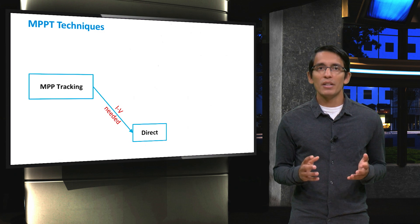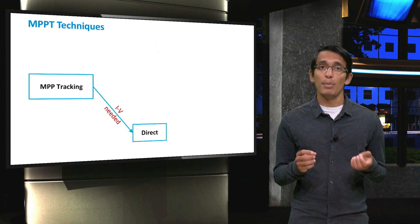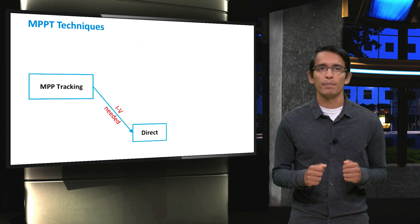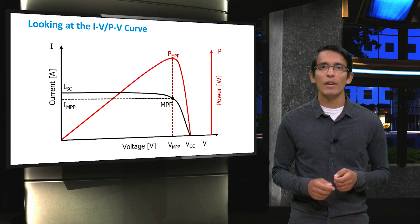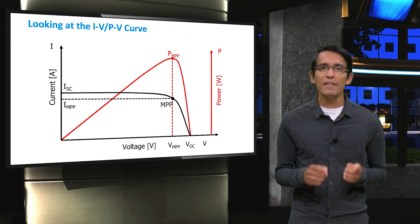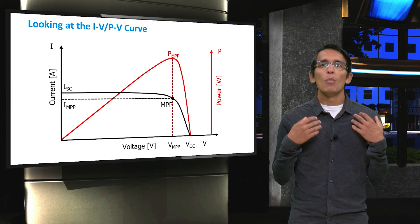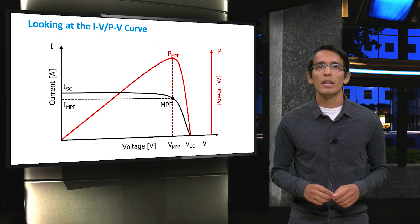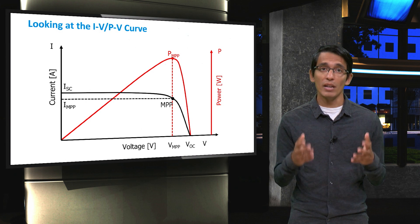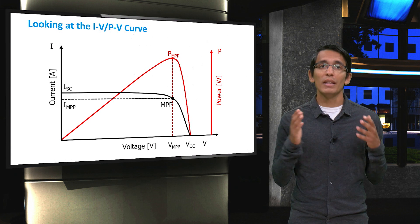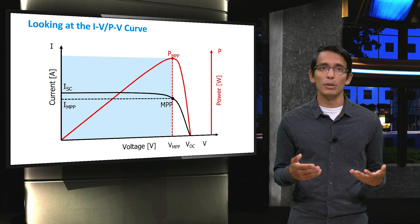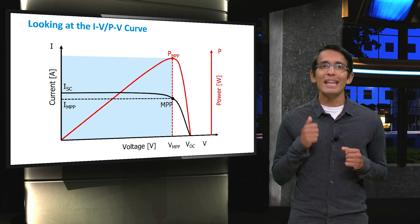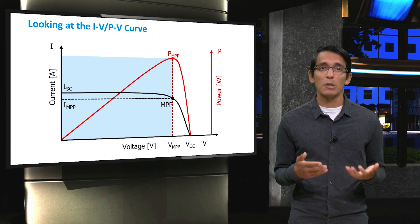However, incremental conductance is not as simple as the perturb and observe technique. Here we have our normal solar panel IV and PV curves. When maximum power point tracking directly, there are three regions of interest. There is the maximum power point itself, and there is also a region to the left of the maximum power point, shown in blue. If we are in this region, we need to increase the voltage to get to the maximum power point.